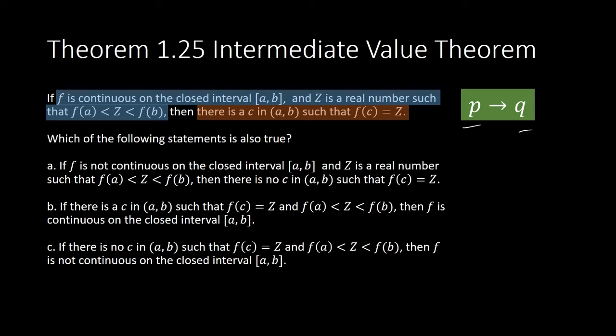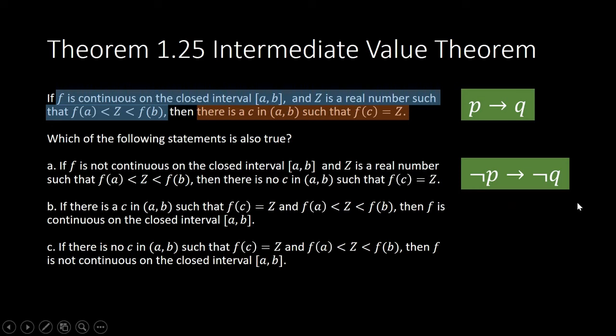Statements like this are what you call conditional statement or implication statement or if-then statement. You studied this in general mathematics. Now, if we are to look at these three statements, we have a name for this. This one, for example, is what you call the inverse of our original statement, p implies q. So this is how you write it: not p, not continuous, then not q. There is no c.